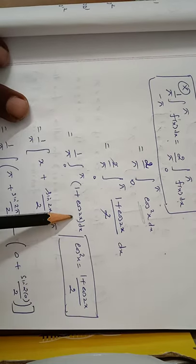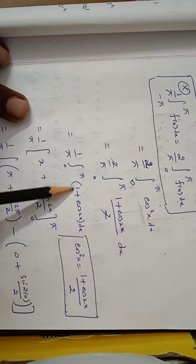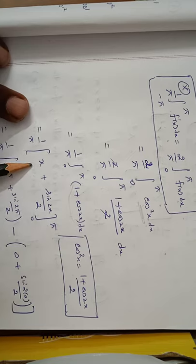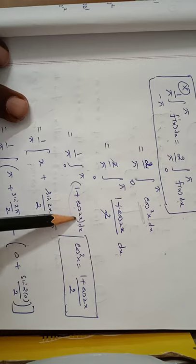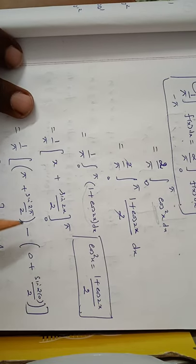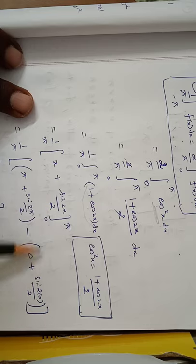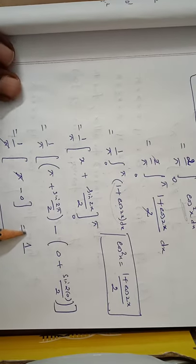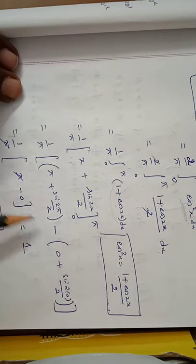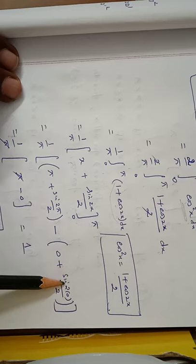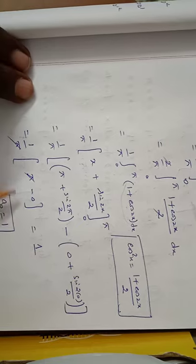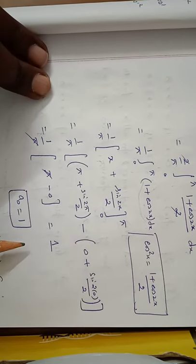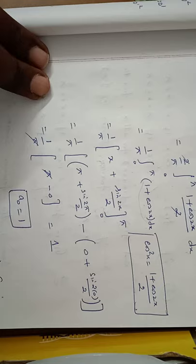This function is integrated with respect to x. The integration of 1 dx is x, and the integration of cos 2x is sin 2x / 2. The lower limit is 0 and the upper limit is π. Applying upper limit minus lower limit: [π + sin(2π)/2] − [0 + sin(0)/2]. Since sin(2π) = 0 and sin(0) = 0, these terms vanish, leaving π − 0. So (1/π) × π — the π cancels — giving the final answer a₀ = 1.